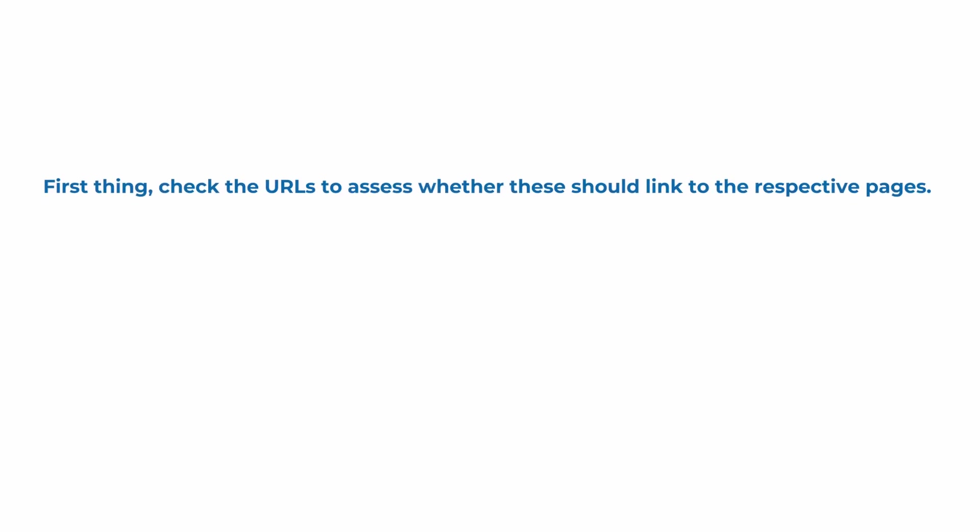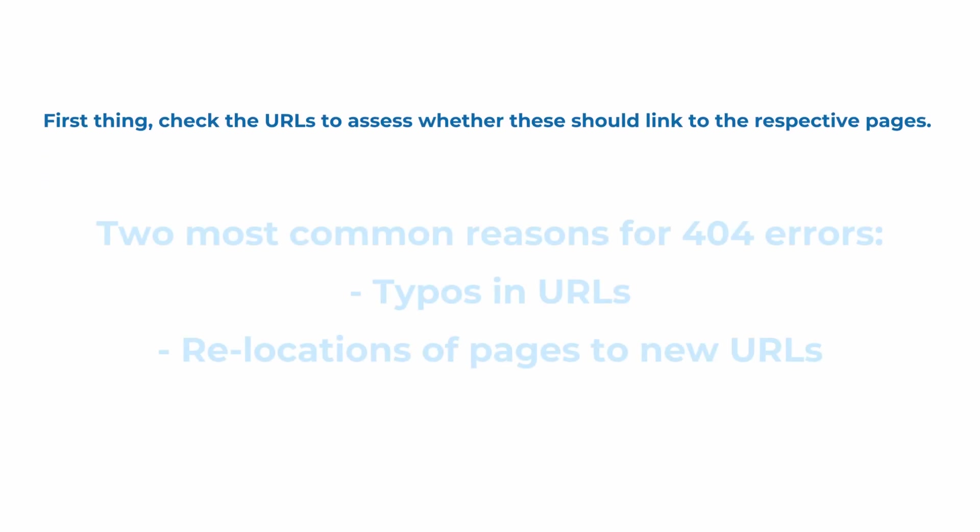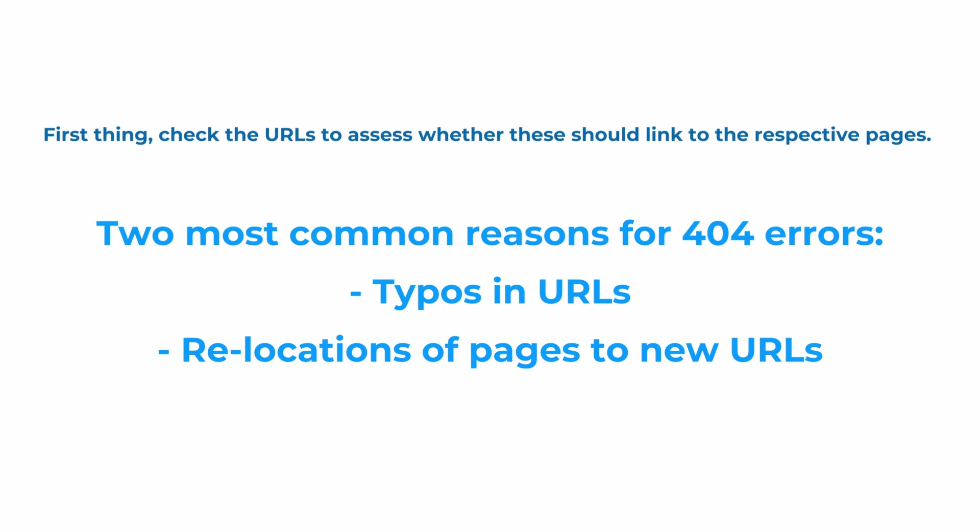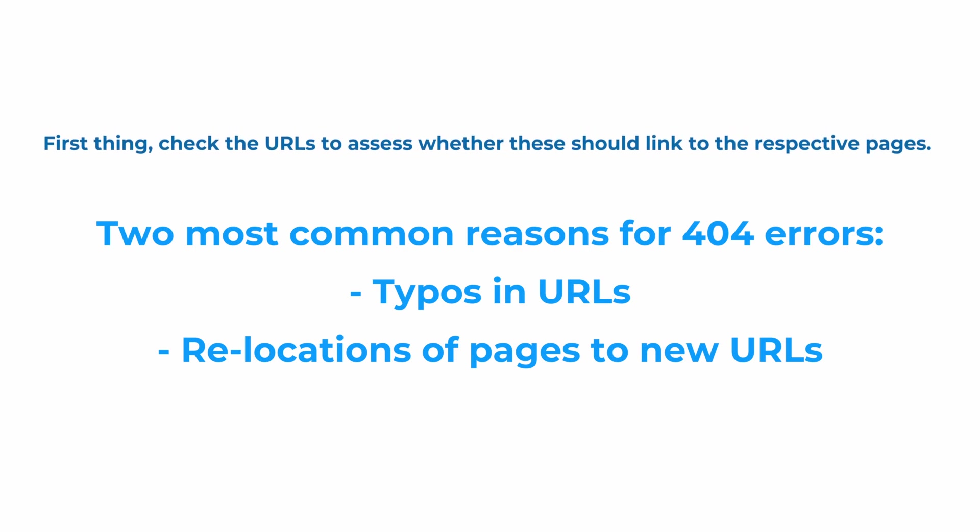Let's check the first type. First, check the URLs to see if they link to the correct pages. Typically, one would need to check for typos or for potential relocations of these pages to new URLs. If typos are detected in the URL, corrections should be made wherever the wrong links have been used. Click on 'See Referring Pages' to see where this URL can be found and eliminate the link with the mistake.